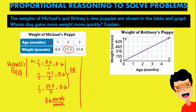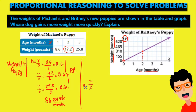Now let's look at Britney's puppy. We have the weight in ounces and the age in months. We can clearly see it is a proportional relationship because it passes through the origin and it is a straight line. We can choose any of the values on the graph — for example, the value of 2 months and 310 ounces. So our value of y, which is the weight, is 310 divided by x, which is 2. That gives us a constant of proportionality of 155 ounces per month.